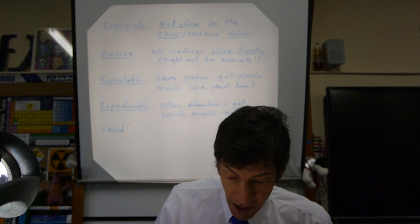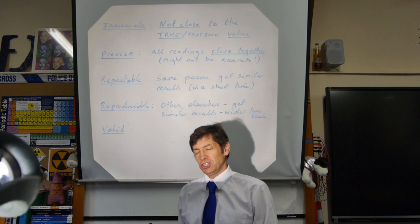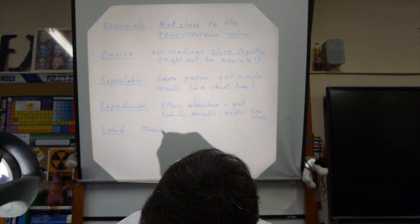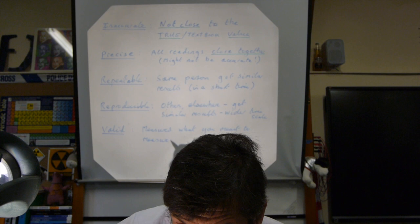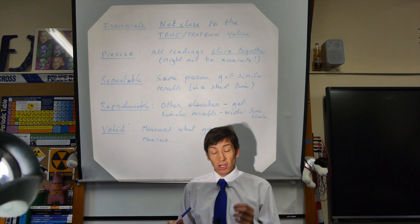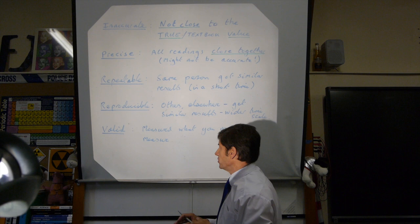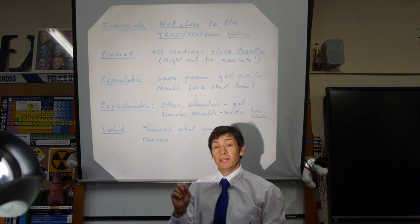What about a valid experiment? It's an experiment where you measured what you meant to measure. For example, if you're measuring the light level from a very small light bulb in a room but it's totally swamped by changes in light level from the room lights and the sun, you're not really measuring the light bulb - you're measuring the light level in the room. That experiment is not valid; the data would be meaningless.